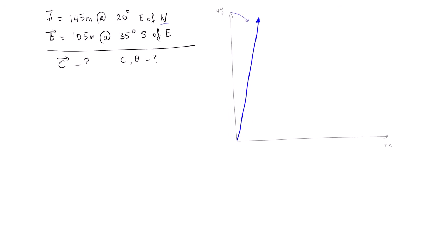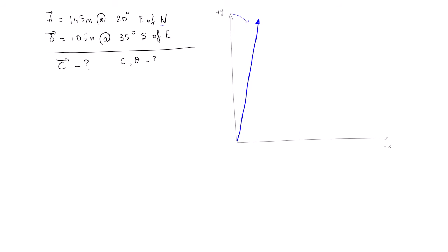Assume this is 145 meters, so I'm going to call it vector A. Let's immediately put the components for vector A — we're making the triangle. So this would be the AX vector, and right here we would have a Y component.